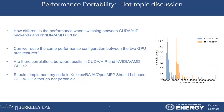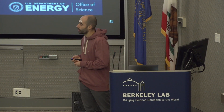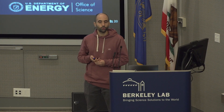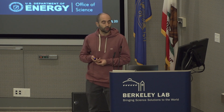Performance portability is the ability of applications to perform efficiently across different platforms or supercomputers. The community is struggling with many performance portability questions in the exascale era. For example, if we target NVIDIA GPUs, should we use a portable language like Kokkos, or should we use CUDA? And if we move to AMD GPUs, should we expect the same performance as with CUDA? Is there any correlation between AMD and NVIDIA GPUs? These are the kinds of questions we want to answer.